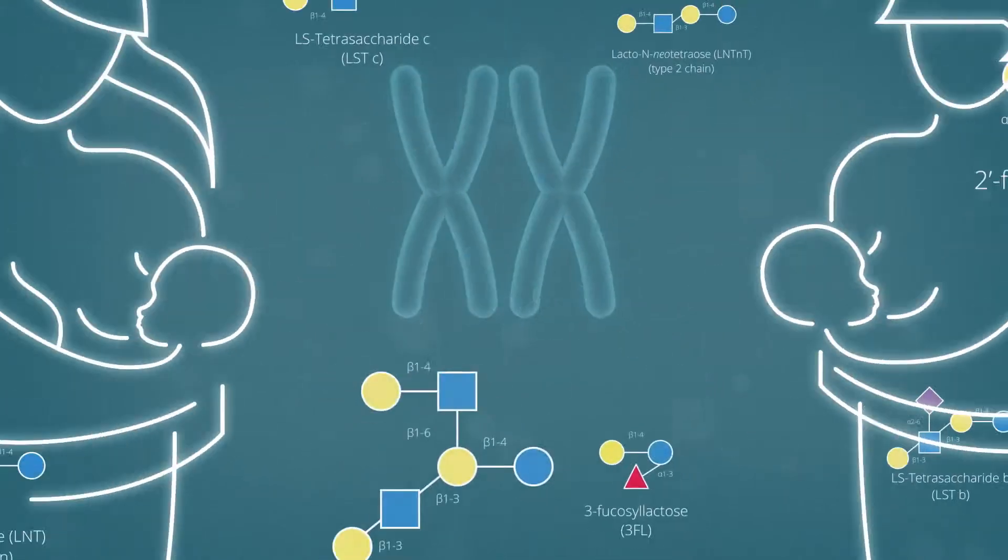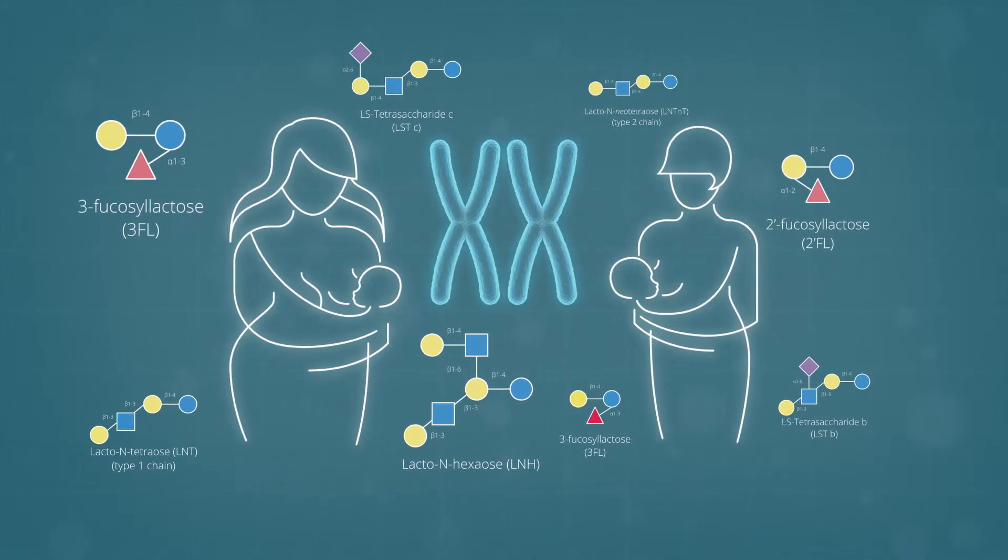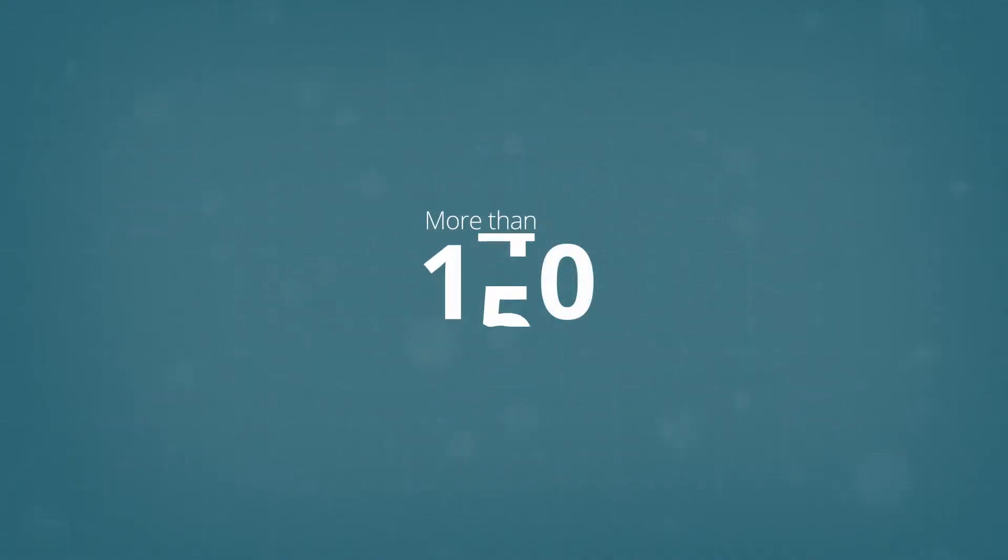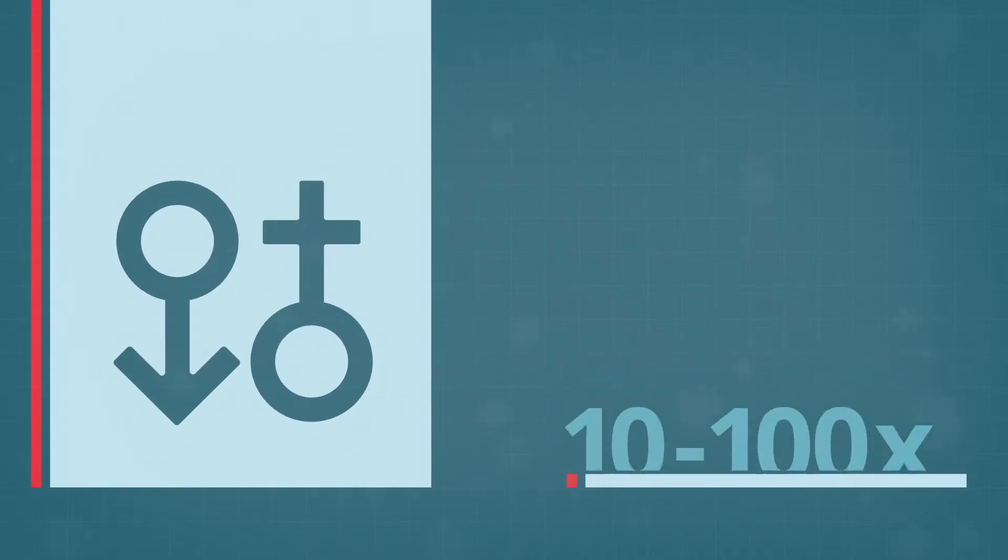HMO composition differs from one mother to another, depending on genetic factors and stage of lactation. More than 150 HMOs have been identified in breast milk, present at a concentration 10 to 100 times higher in humans than in other mammals.